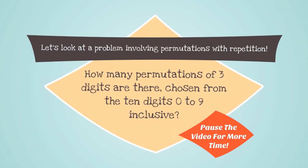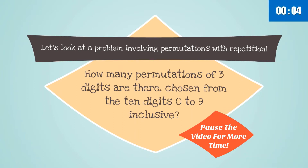Let's look at a problem involving permutations with repetition. How many permutations of 3 digits are there chosen from the 10 digits 0 to 9 inclusive? Pause the video for more time to solve this problem.